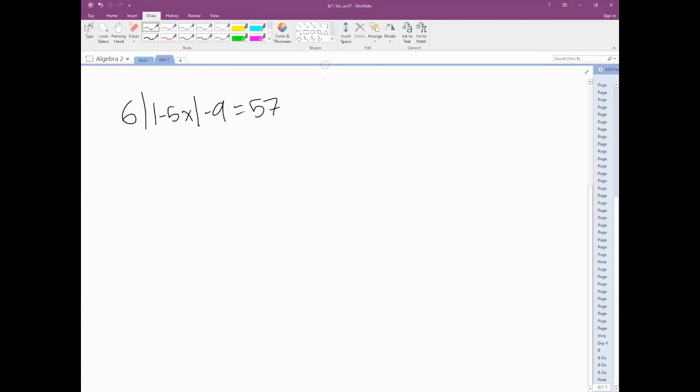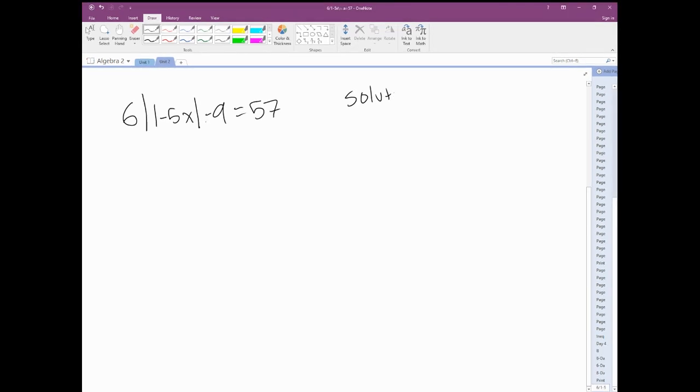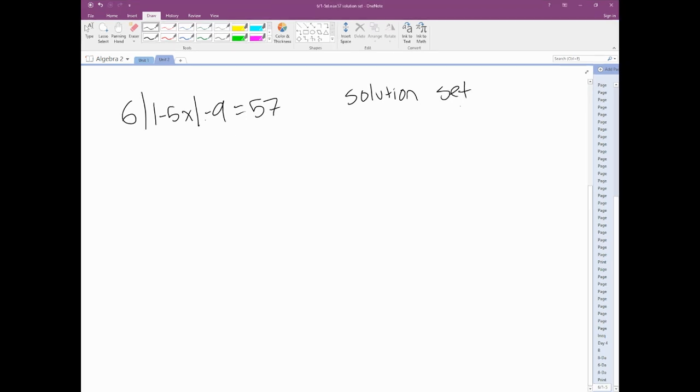We're going to look at how to solve this problem. We have 6 times the absolute value of 1 minus 5x minus 9 equals 57, and it's asking for the solution set. The solution set are my two values of x that fit this equation.